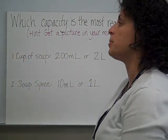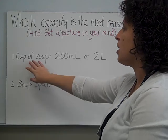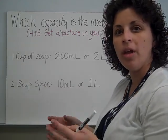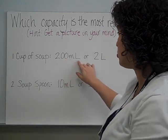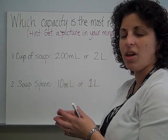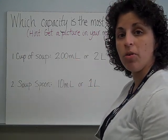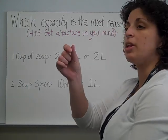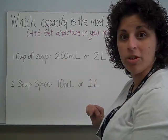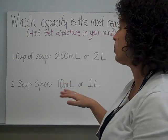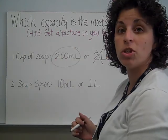Another type of question we're going to be asked is: which capacity is the most reasonable? Here's a hint — get a picture in your mind. A cup of soup. Is it going to be 200 milliliters or two liters? Well, a cup of soup is sort of small. I know what two liters looks like — that's the bottle of soda at the grocery store. A bottle of soda in a cup of soup? Definitely not. So it must be 200 milliliters.